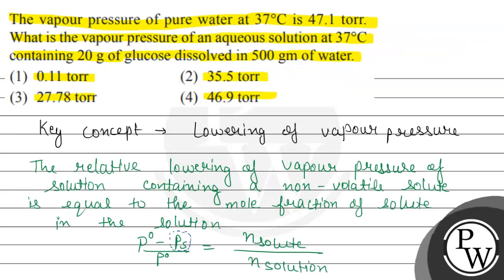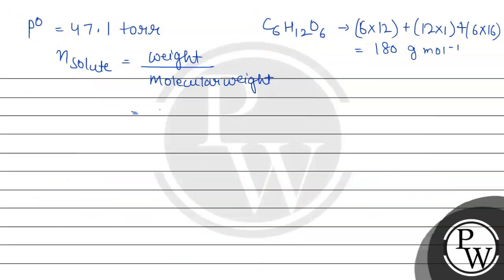And according to the question, 20 gram of glucose is added. So 20 divided by 180, by this division we get 1 upon 9 which is 0.111 moles.